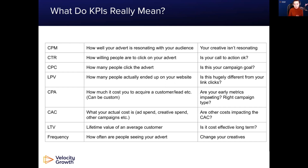I've seen up to a 50% difference between link clicks and landing page views in many circumstances — factor that in. Your CPA tells you how much it costs to acquire a customer or a lead. Your CAC includes all other costs too: the graphic designer you've hired, the videographer, the marketer — all of that can drive your CAC up. Lifetime value: if you're selling a product at $40 with a $20 margin and it's costing you $20 to get a customer, you're losing every time. But if it's a subscription model with a $20 margin every single month and the average lifetime is six months, then that $20 acquisition cost makes sense. Frequency tells you how often people are seeing your advert and whether you need to change your creatives. KPIs can also indicate what to do or change on a platform.